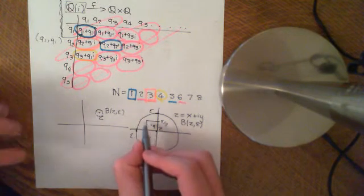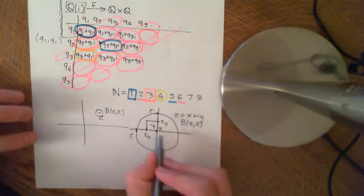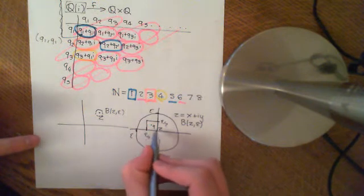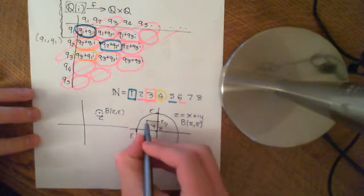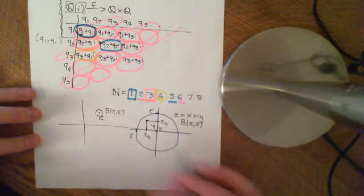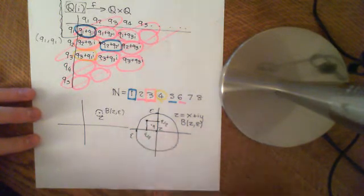So the reason this box is completely contained within this ball is because the furthest point of this box, the point that's absolutely the furthest away from Z, is going to be this point here. And what's the distance of that point from that point? Well, just use Pythagoras' theorem.